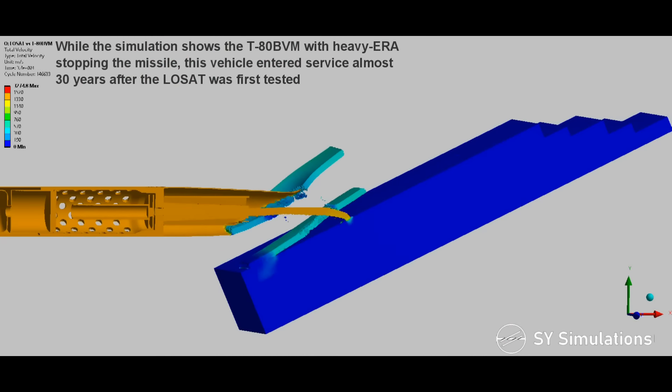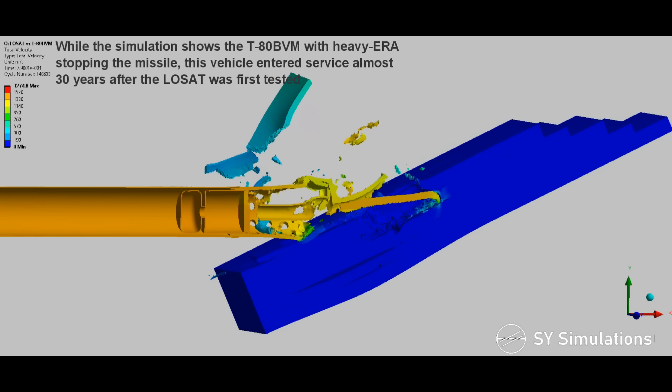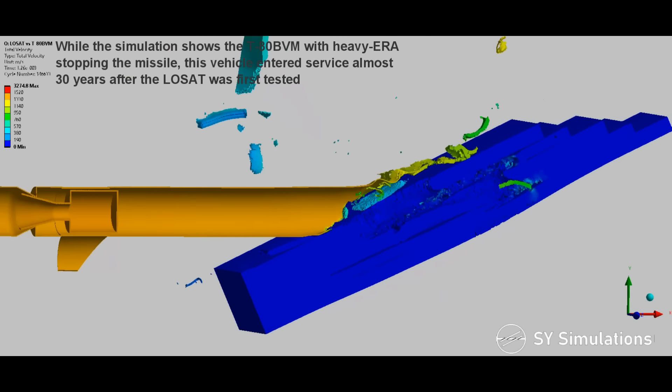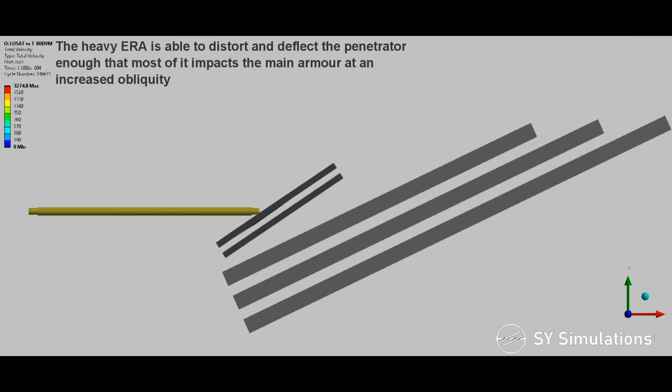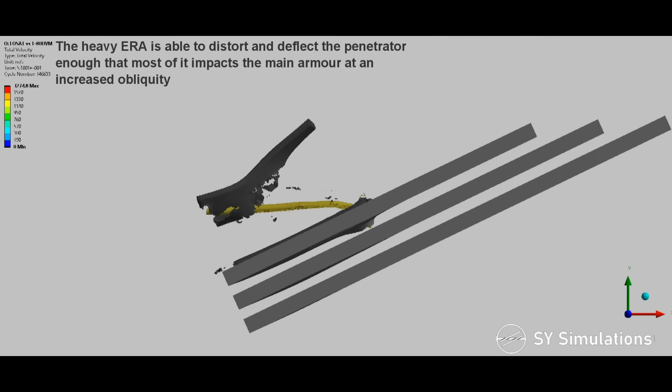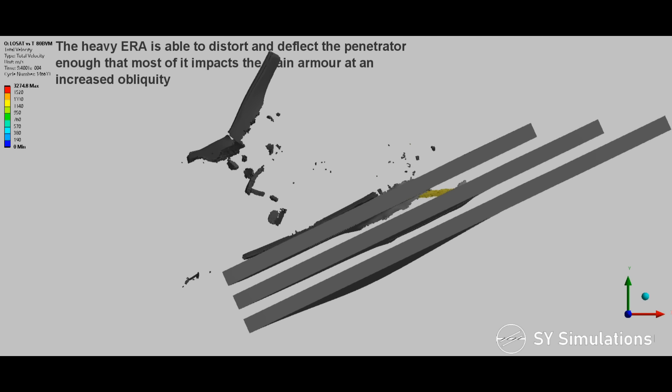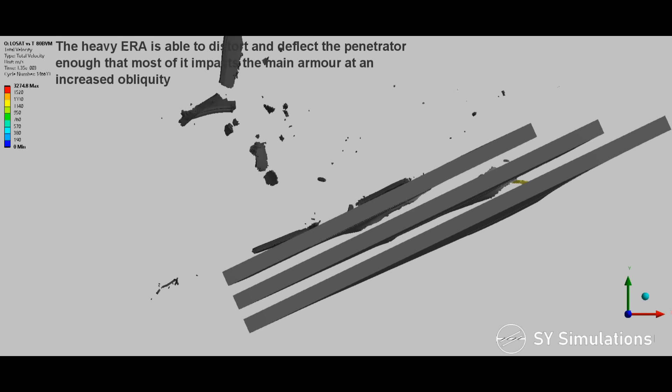While the simulation shows the T-80BVM with heavy explosive reactive armor stopping the missile, the vehicle entered service almost 30 years after the LOSAT was first tested. The heavy explosive reactive armor is able to distort and deflect the penetrator enough that most of it impacts the main armor at an increased obliquity.